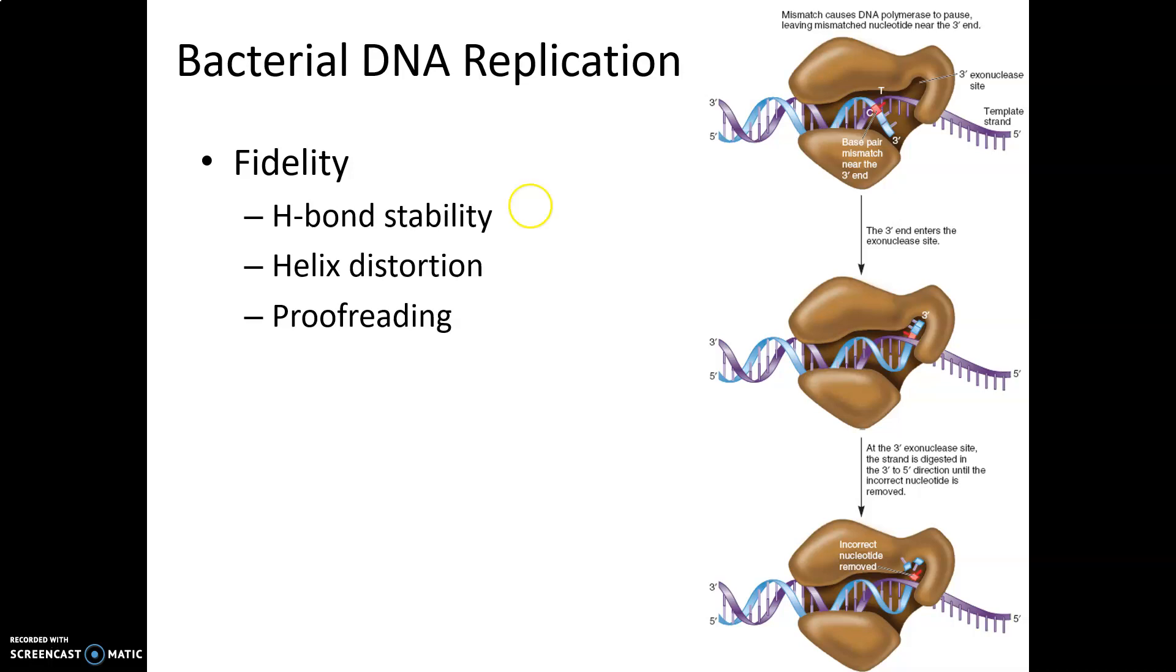The third level is DNA polymerase has the ability to proofread. It can make sure it's doing the correct thing, and if not, it has a five prime exonuclease that allows it to take out the incorrect base pair and put in the correct one. These three steps allow DNA replication to be faithful.